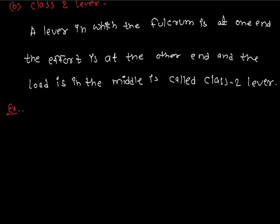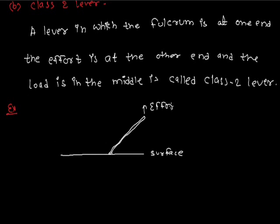Examples of class 2 lever include: paper cutter, bottle opener, nutcracker, a bar used to lift a load, wheelbarrow, lemon crusher, screwdriver, and others. For example, a bar lifting a load — this is the surface, this is the load, this is the fulcrum, and this is the effort end.